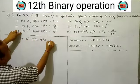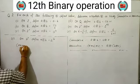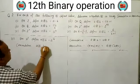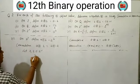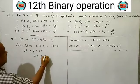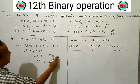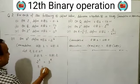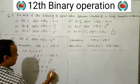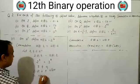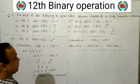Fifth part: on Z+, the operation defined is a★b = a^b (first element raised to the power of second element). Checking commutative: A★B vs B★A. Taking 2 and 3 from Z+: 2★3 = 2^3 = 8, and 3★2 = 3^2 = 9. Since 8 ≠ 9, the operation is not commutative.